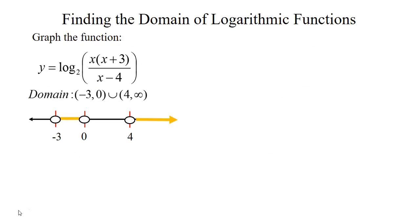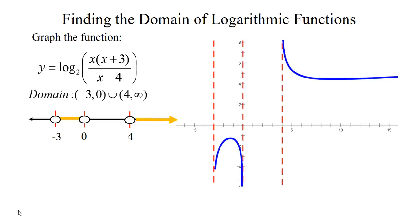Let's look at what the graph looks like based on that information. We have three vertical asymptotes: one at x equals negative 3, one at x equals 0, and one at x equals 4. There are two branches of our graph — one on the interval from negative 3 to 0, and one on the interval from 4 to infinity.